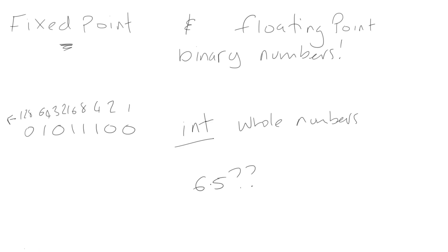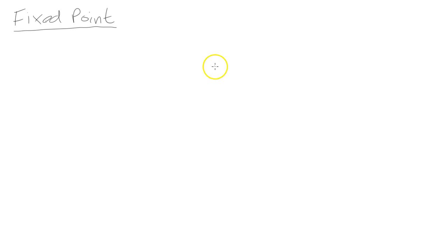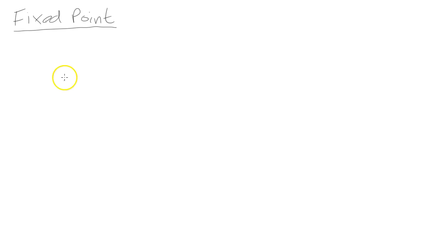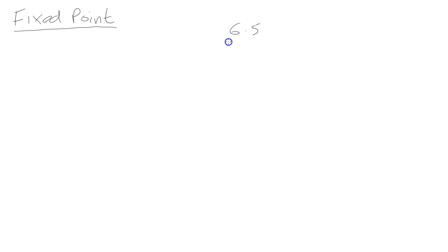So let's take a look at how that works. The first thing we're going to look at is fixed-point binary numbers, and this is really easy to understand. We're going to do that 6.5 number — we're going to show you how we can represent the number 6.5 as a binary value.